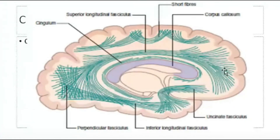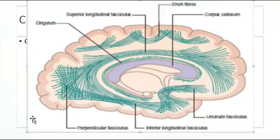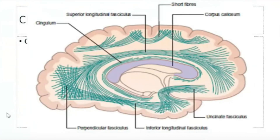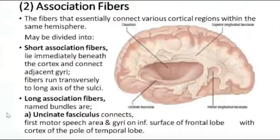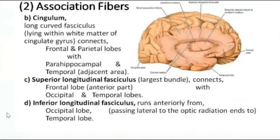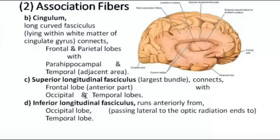The superior longitudinal fasciculus starts from the frontal lobe, passes through the parietal lobe, goes to the occipital lobe, and then to the temporal lobe as well. It is the largest bundle and connects the anterior part of the frontal lobe with the occipital and the temporal lobes.